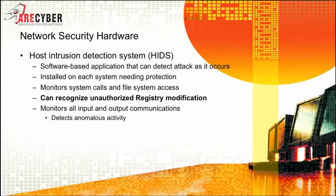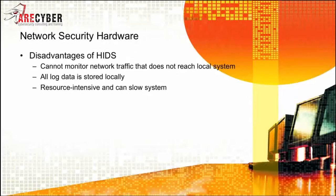With intrusion detection systems, you have a couple different types. Starting with the host-based intrusion detection system, or HIDS — usually a software application that can detect attack as it occurs on the local system. It monitors system calls and file system accesses and can recognize unauthorized registry modifications. The disadvantages are that it cannot monitor network traffic until it reaches the local system, all log data is stored locally requiring larger hard drive space, and it is extremely resource-intensive, tending to slow down the local host.